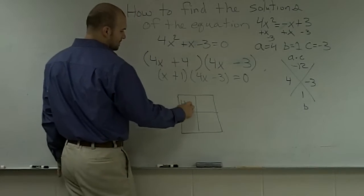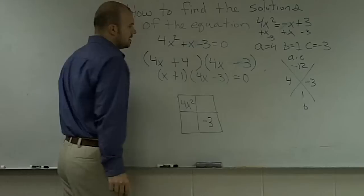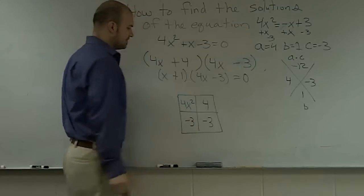And if I take my original a term, which is 4x squared, and I take my c term, which is negative 3, and I take my two factor forms, which are 4 and negative 3.